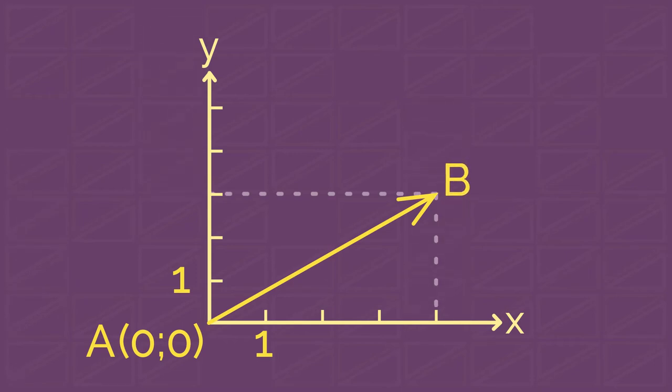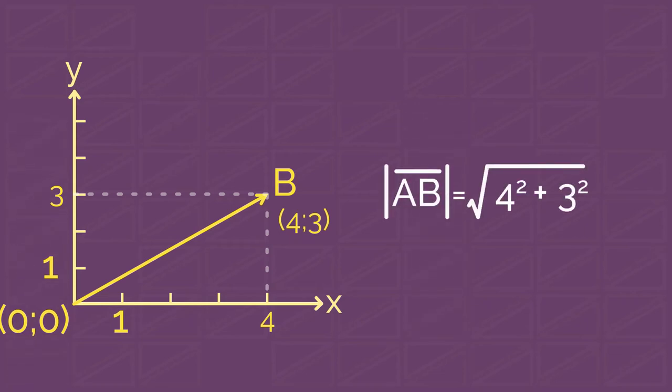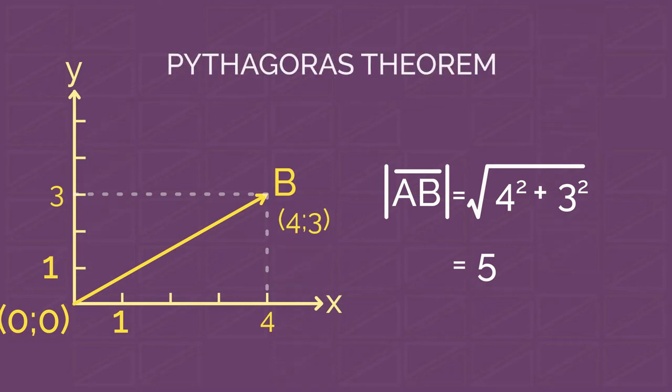Easy. Our vector is now just two numbers, the coordinates of the head. Assume that B has the coordinates (4,3). Then AB equals the square root of the sum of 4 squared and 3 squared, which equals 5. And that we know because of the Pythagoras theorem.